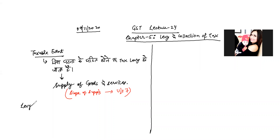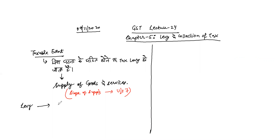Our chapter is Levy and Collection of Tax. Levy means 'lagu hona' — the event upon the occurrence of which tax becomes applicable on you and is imposed on you. You also call this imposition — levy means imposition, it means to become applicable.